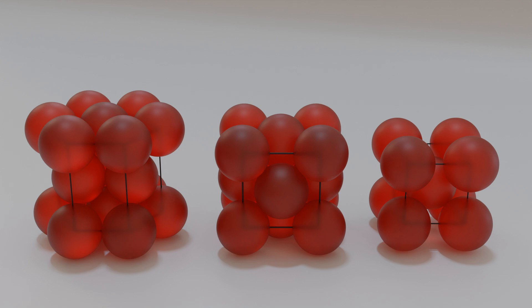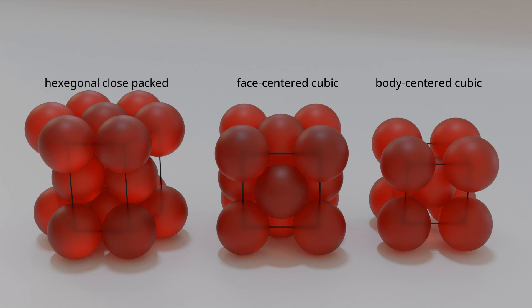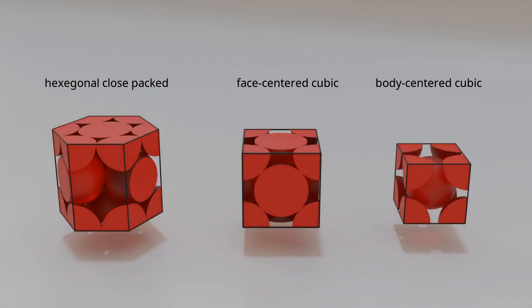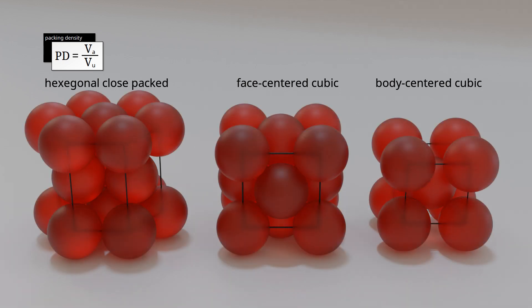In the linked video, the most important lattice structures of metals were discussed in more detail. These include the body-centered cubic lattice, the face-centered cubic lattice, and the hexagonal close-packed lattice. Characteristic for these structures is the so-called packing density. The packing density is the ratio of the atomic volume within a unit cell to the total volume of the unit cell. The atoms are assumed to be spheres touching each other. In the following, we derive the respective packing density for the three lattice types mentioned above.